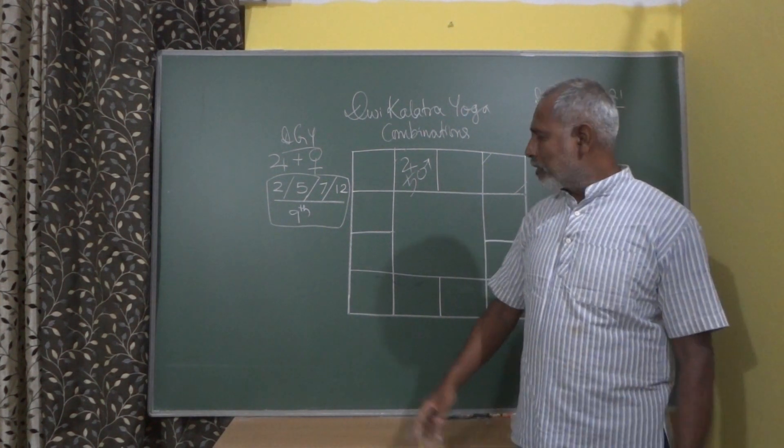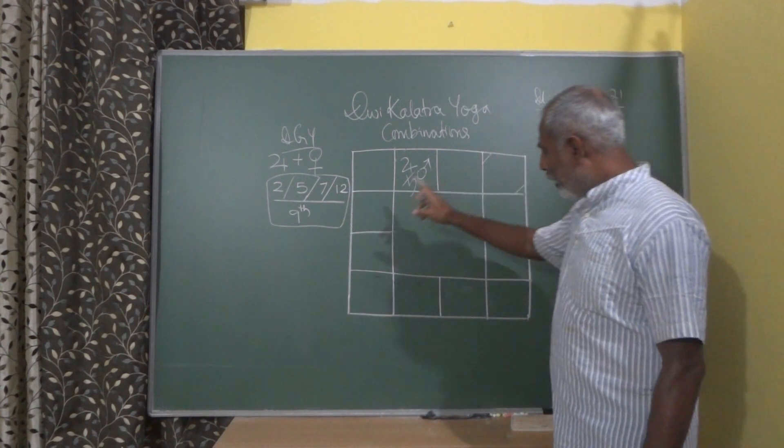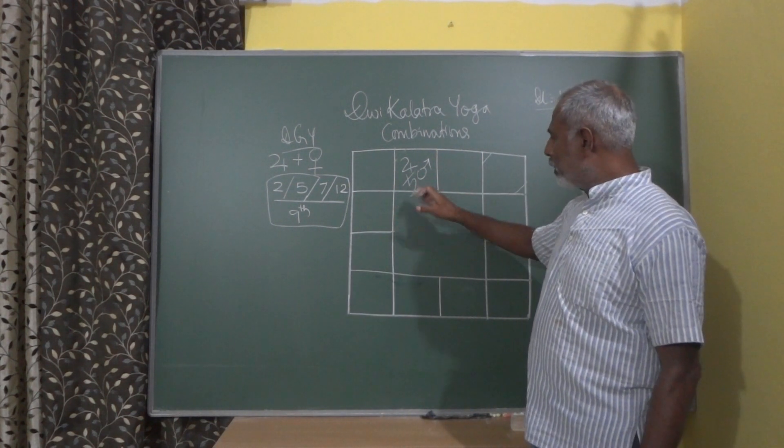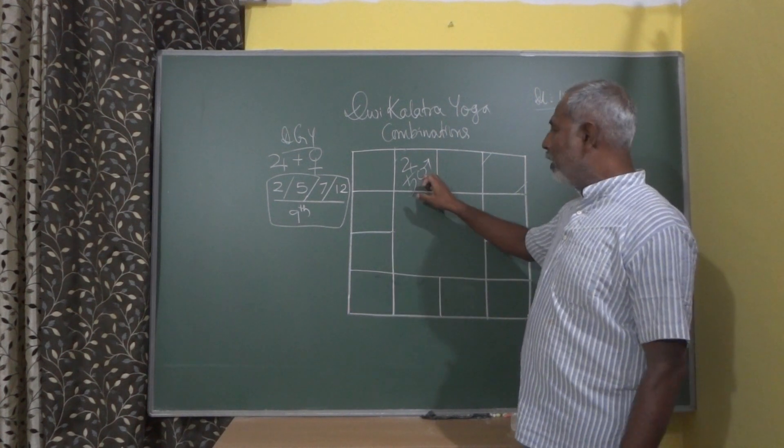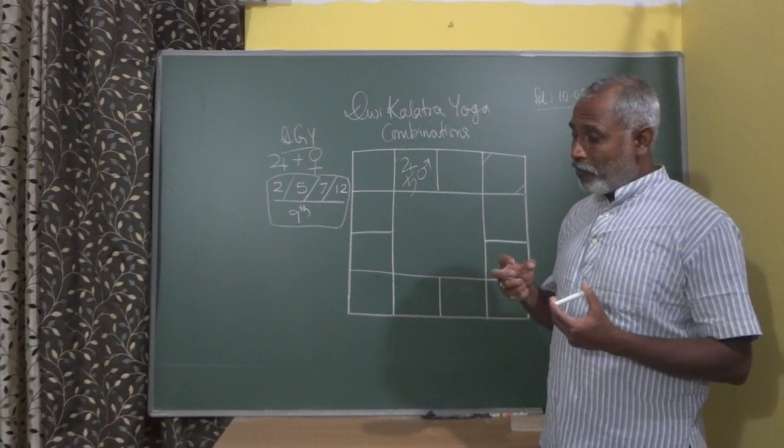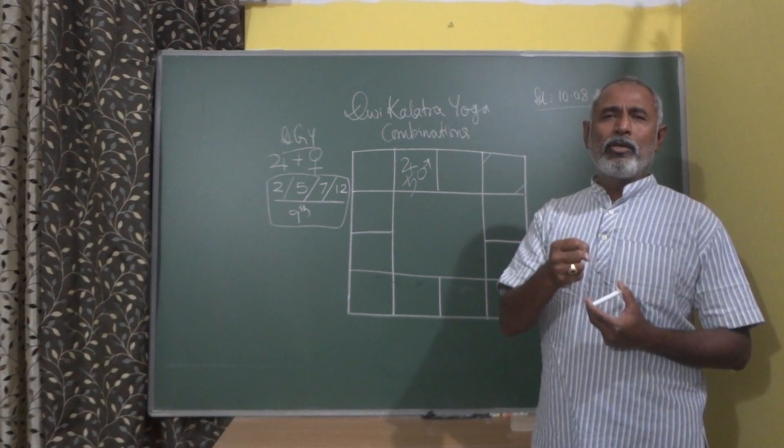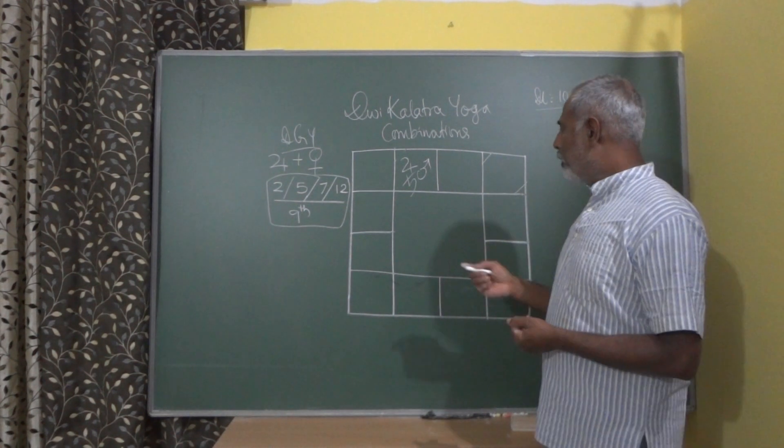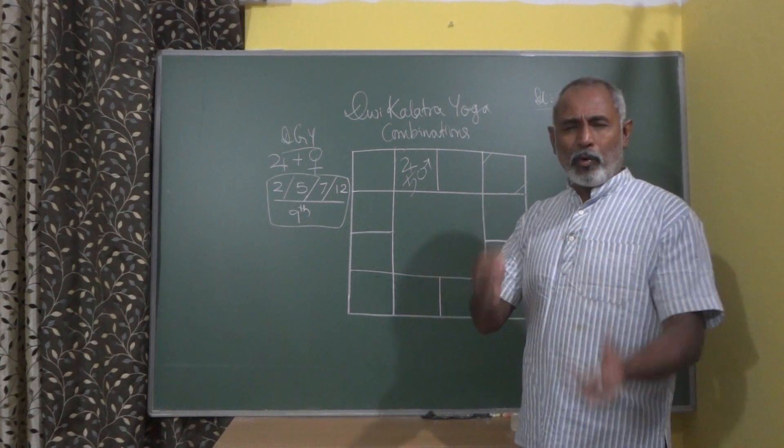I have added Saturn here. So what is Saturn? Saturn is the 9th lord from Gemini. The 9th lord getting associated with the 7th lord and another planet will give a very strong thrust to the 2nd marriage. And this thrust will become more stronger